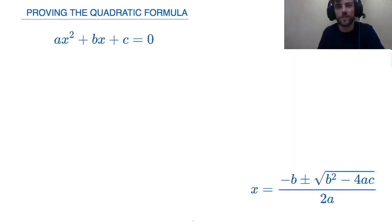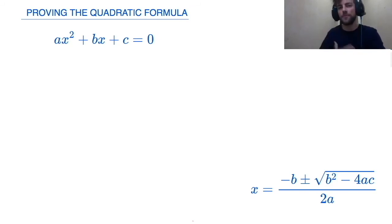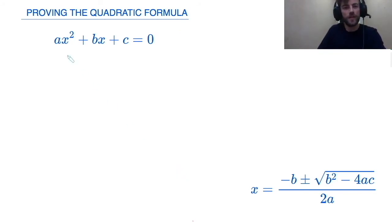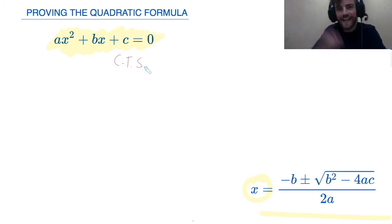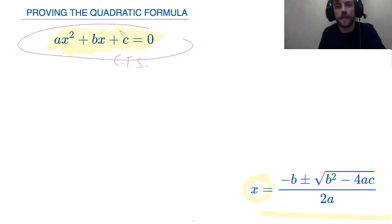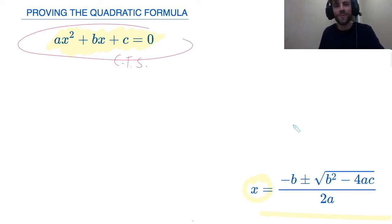Ever wondered where the quadratic formula comes from? This is a bonus proof, for both GCSE and A level — not a requirement, but an excellent exercise in algebra. You must start from ax squared plus bx plus c equals 0 and show that x equals the quadratic formula by solving this equation by completing the square with letters instead of numbers. Have a go by yourselves — pause the video now.